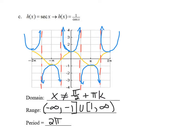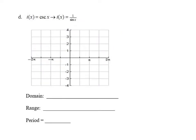Now let's look at cosecant. I challenge you to do the cosecant graph on your own. We know it's 1 over sine, so sketch the sine curve to identify where the asymptotes are — everywhere sine crosses zero. Pause the video, sketch the graph, then fill in the domain, range, and period.